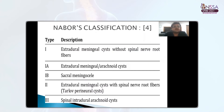Nabors was first to classify this kind of cyst. According to his classification, Type 1 is an extradural meningeal cyst without spinal nerve root fibers. Type 2 is an extradural meningeal cyst with spinal nerve root fibers, usually called the Tarlov cyst. Type 3 are the spinal intradural arachnoid cysts. Type 1 is subdivided into extradural meningeal arachnoid cyst (1a) and Type 1b into sacral meningoceles.